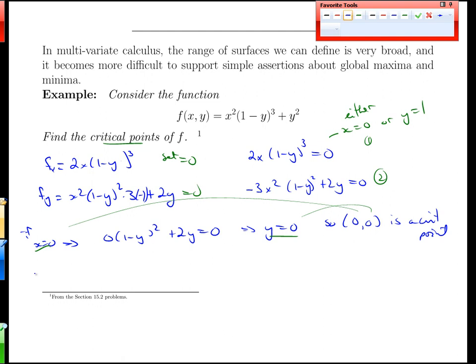What about if y were equal to 1? If y were to equal 1, then we would have -3x² times 0 plus 2 times 1 equals 0, or 2 times 1 equals 0. That's impossible, right? So if that's impossible, which means that there's no critical point with y equal to 1.